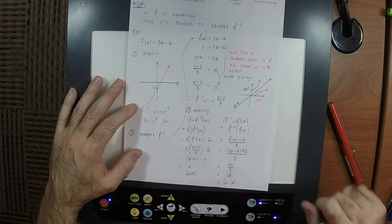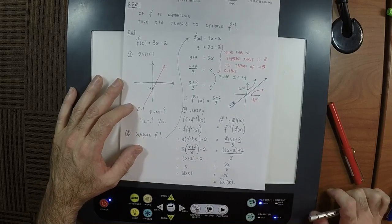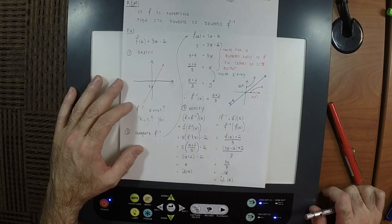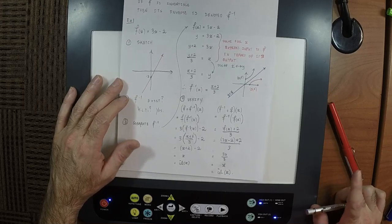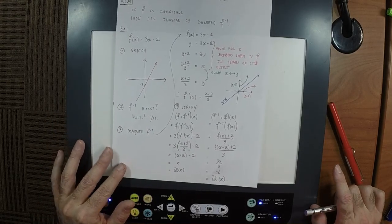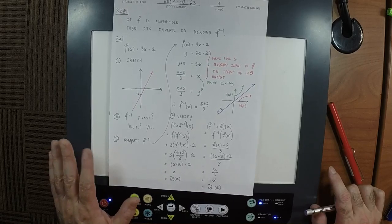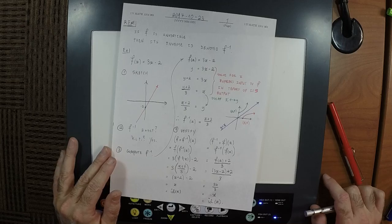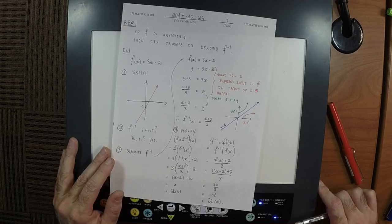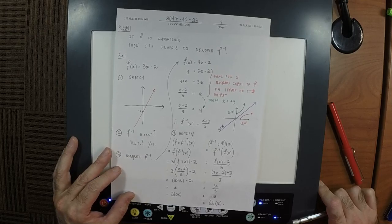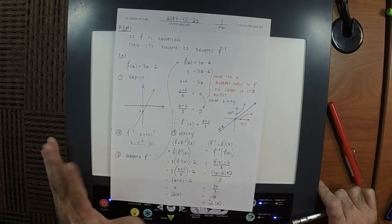Why do you have to check it both ways? Because sometimes it works one way but not the other. And the reason why is that composition doesn't commute. Addition commutes, multiplication commutes, but composition does not commute.